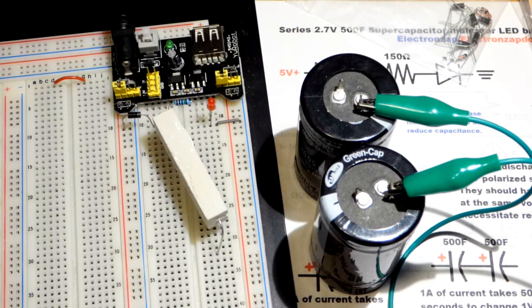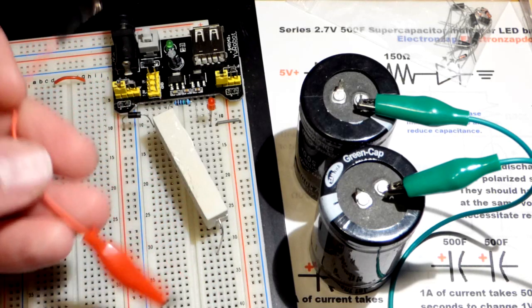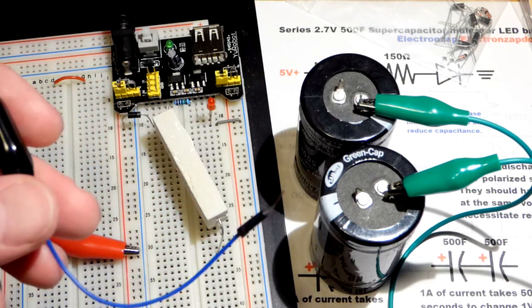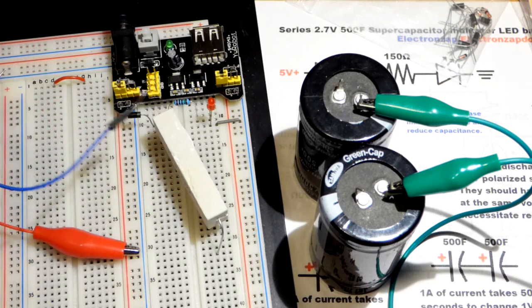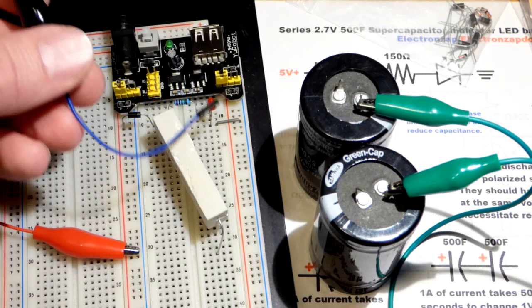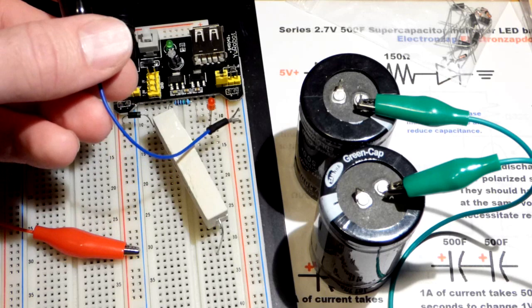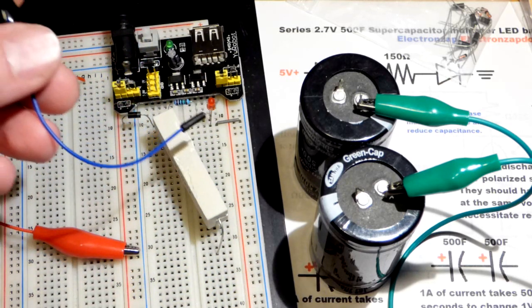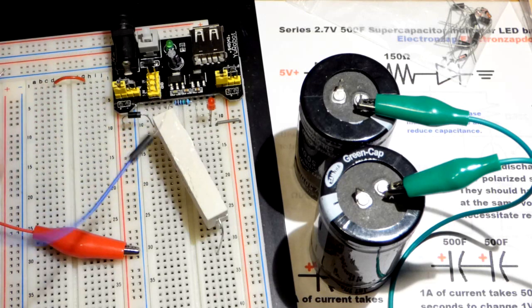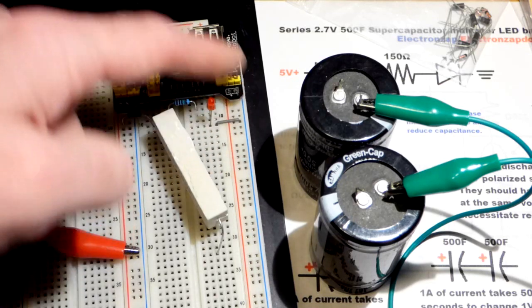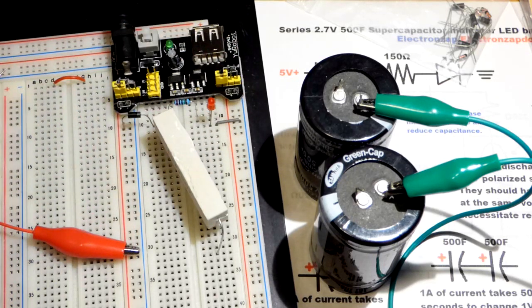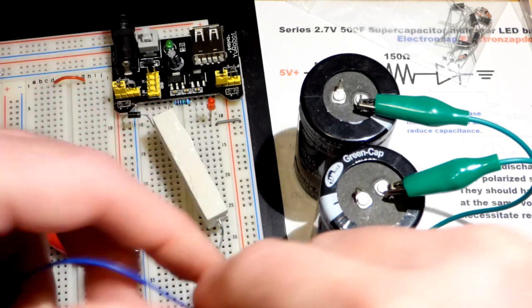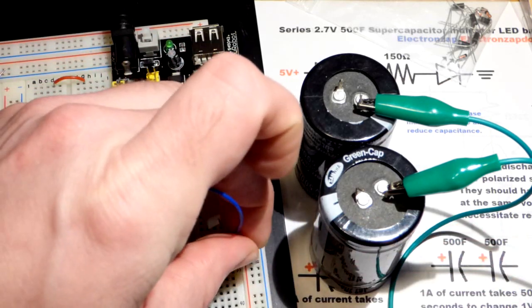Now let's do the negative jumper first. Everything's going to share the same ground rail, so the power supply puts ground, 0 volts, at the blue rail, and those two are always connected no matter what, the negative rail to the negative rail. So you have a path through the power supply.